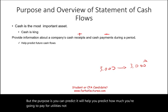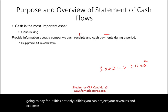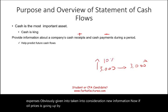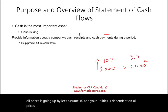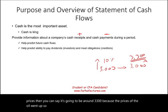Not only utilities — you can project your revenues and expenses, obviously taking into consideration new information. If oil prices are going up by, let's say, 10% and your utilities depend on oil prices, then you can say it's going to be around $3,300 because the prices of oil went up. So it can help you predict this.